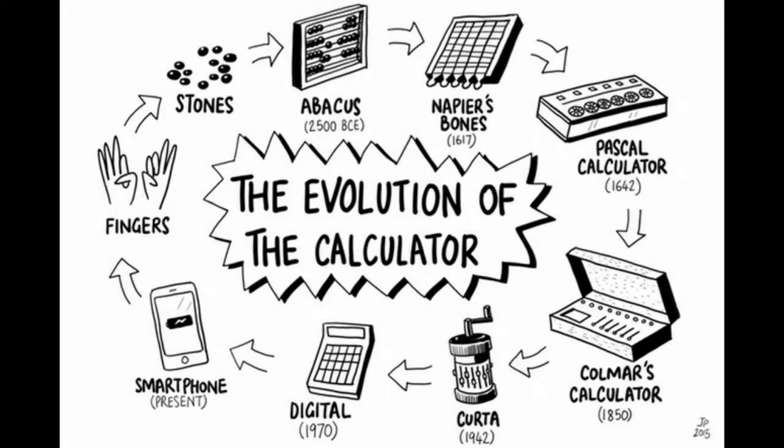This next picture shows the evolution of the calculator, and the abacus was kind of the first part of that. There were people counting with fingers, they counted stones, then they used the abacus, then they had Napier's Bones, which was like a multiplication table. Then the Pascal Calculator was more of a mechanical calculator. The Colmar Calculator was just a version of Pascal's. The Curta was more handheld but it was the same idea as Pascal's and Colmar's.